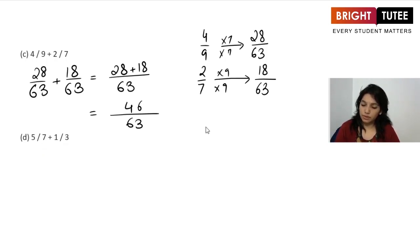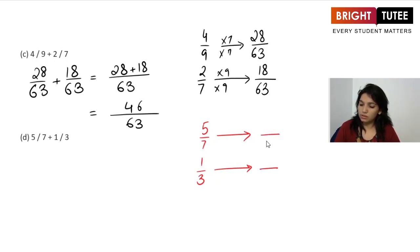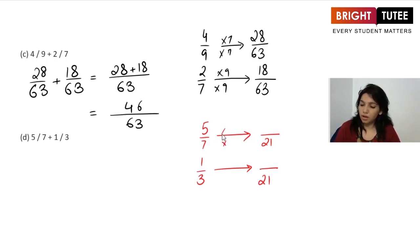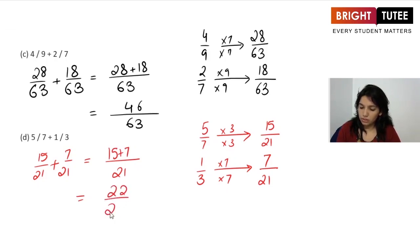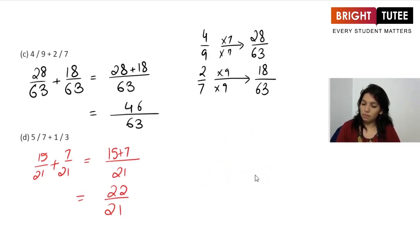Next: 5/7 plus 1/3. Converting to equivalent fractions with the same denominator: the LCM of 7 and 3 is 21. Multiplying the first by 3 and the second by 7 gives 15/21 plus 7/21. Adding: 15 plus 7 is 22, so we get 22/21. Notice this is an improper fraction.